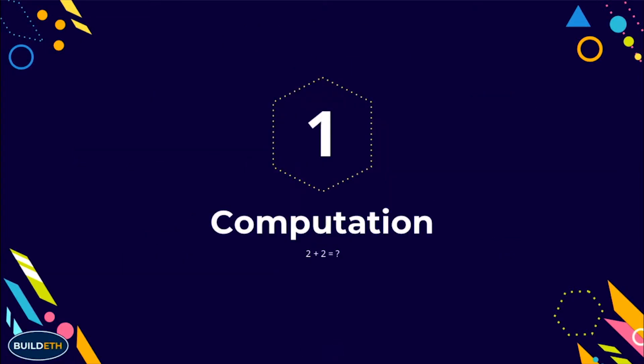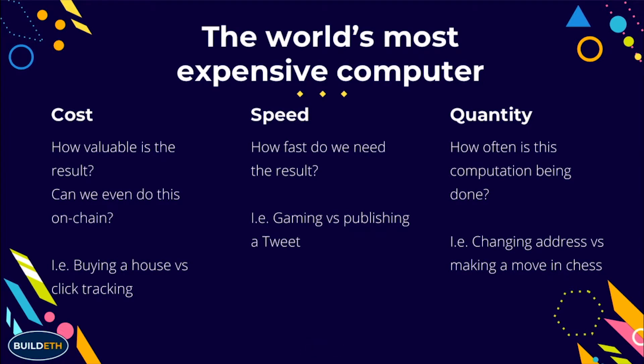Let's cover computation first. Using the three categories — cost: how valuable is this result? Using a real-life example, is it like buying a house or like click tracking? Buying a house is a huge transaction that needs to be totally correct and verifiable, whereas click tracking happens maybe a million times a day, and if we lose a data point, that's okay as long as we get the general result. Also consider: can we even do this on-chain? There's an Ethereum block gas limit, so some tasks require off-chain services at the current state.